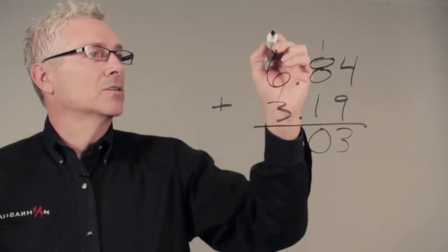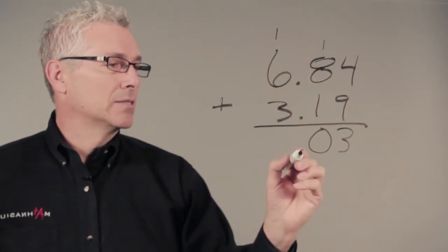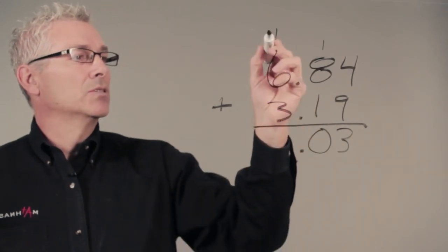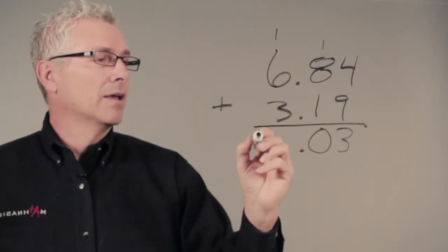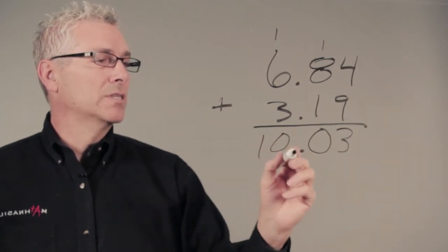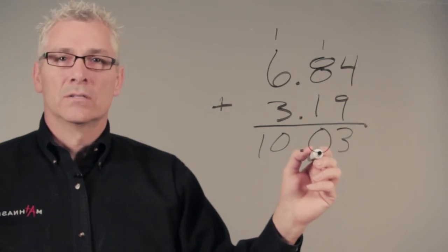Again, we write our 0, we carry our 1. Our decimal stays in the exact same place lined up. We add 6 plus 3 plus 1, which is 10 and our answer is 10.03 or 10 and 3 one hundredths.